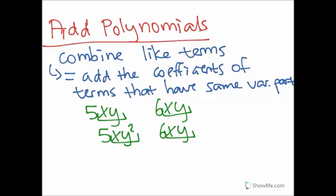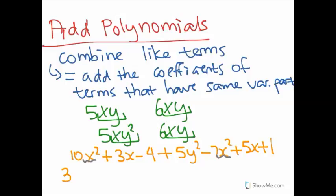So, let's simplify something like 10x squared plus 3x minus 4 plus 5y squared minus 7x squared plus 5x plus 1. Let's look for all of the like terms. We have x squared here and an x squared here. So, we can combine these two terms to get a 10 minus 7 times x squared, or a 3x squared.